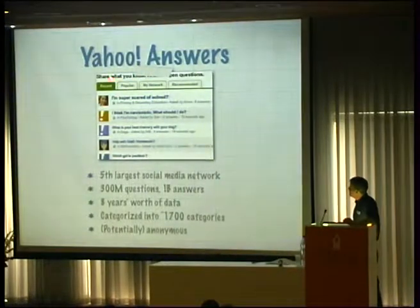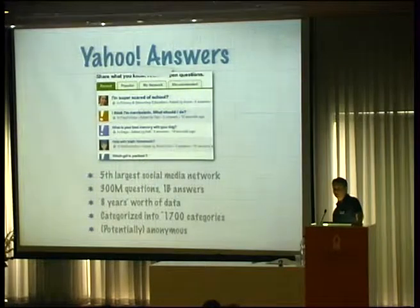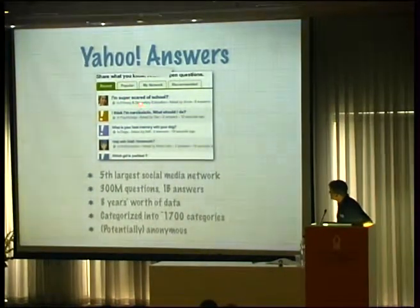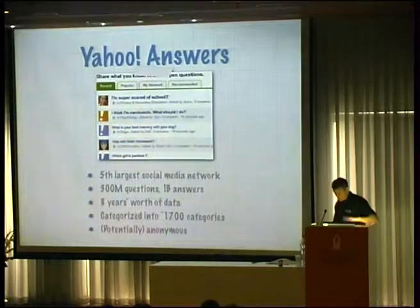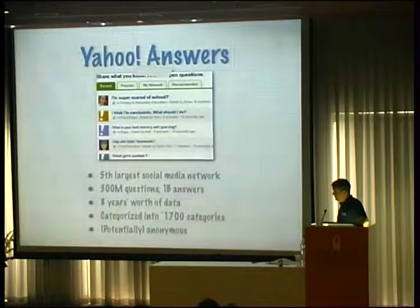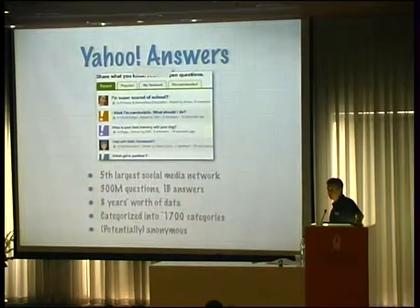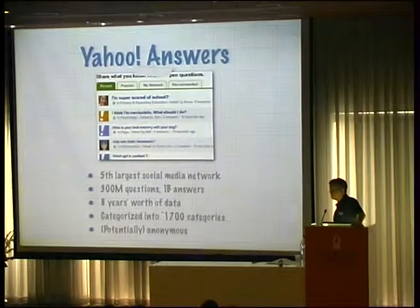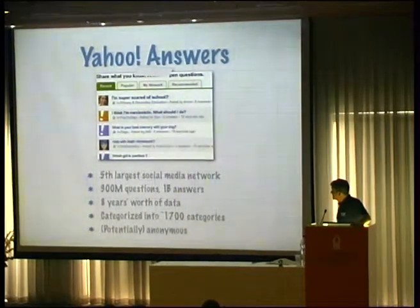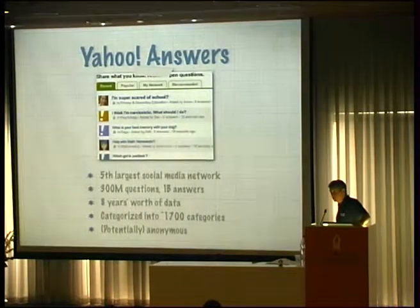The data source under study is called Yahoo Answers. This is a website where random people on the internet post whatever interests them — questions about school, psychology, behavior, pets, homework help, fixing cars, decorating their home, relationships — anything and everything. Once they post a question, it's public on the web and they get answers from other people. The site has existed for seven or eight years and amassed over 300 million questions and over a billion answers.